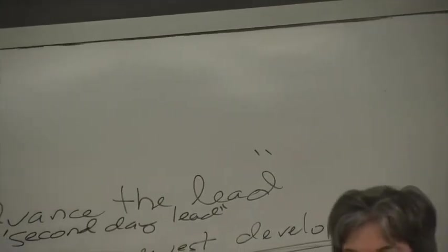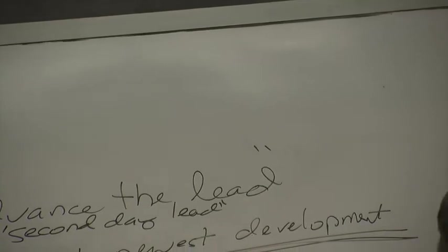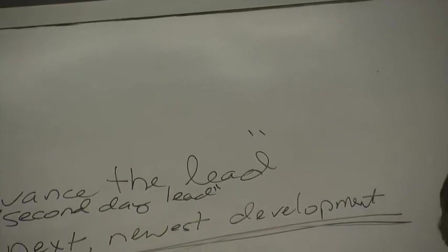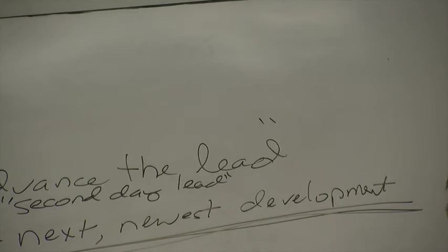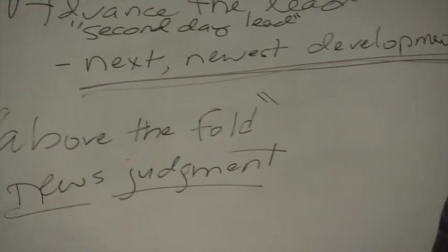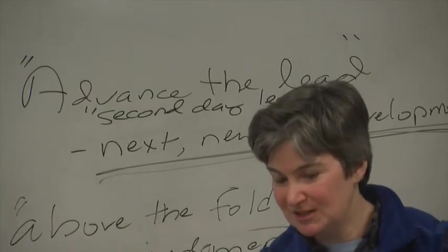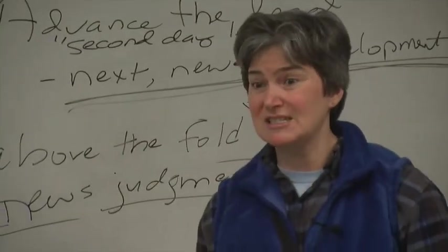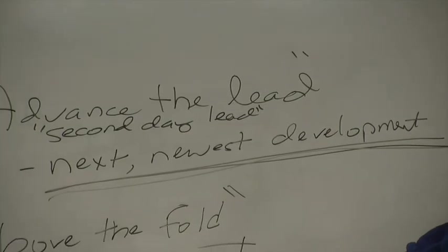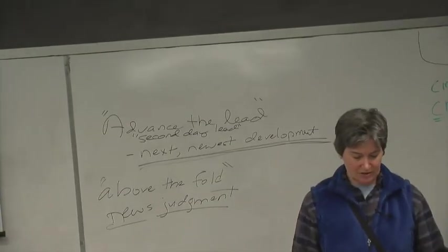Also, at the top of page 28 we had tabloid and broadsheet — really good terms. Those are the two different shapes of a newspaper. Then on page 30, it talks about being a converged journalist — kind of the title of this course. It gives the example of the multimedia journalist, the backpack journalist, sometimes called a one-man band. More and more, everyone is expected to be able to do these things, so make sure you understand the converged journalist.